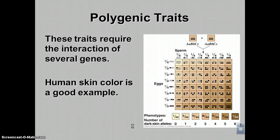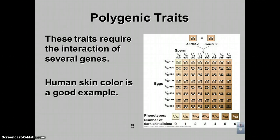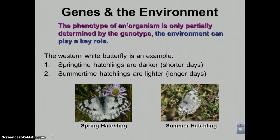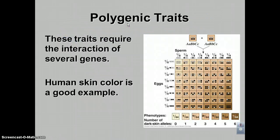Polygenic traits occur when you have a number of different gene pairs that have to work together to create the trait. Human skin color, and in fact a lot of human traits, are actually polygenic. Remember, the word 'poly' means many, and 'genic' refers to genes — so it takes many genes to create this trait.